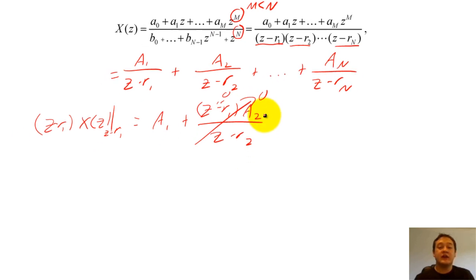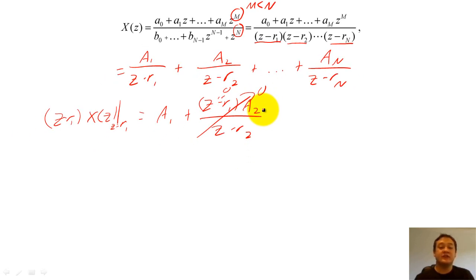Since we know that exponential sequences yield Z-transforms of this form, we can massage our big equation to take a similar form.